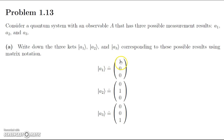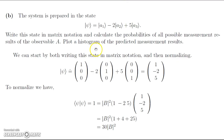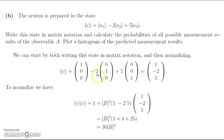The system is prepared in the state psi equal to A1 minus 2A2 plus 5A3. We want to represent this state using matrix notation, calculate the probabilities, and plot a histogram of the predicted measurement results. We represent psi as 1 times (1,0,0) minus 2 times (0,1,0) plus 5 times (0,0,1). We scale each vector by its coefficient and add across, giving us the column vector (1, -2, 5).